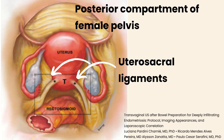This is a diagram showing the posterior compartment of the female pelvis. Uterosacral ligaments insert into the uterus at the level of the internal os of the cervix, just above the posterior vaginal fornix. When the uterosacral ligament is normal, it is typically not visualized on ultrasound.